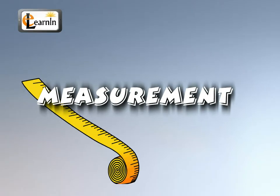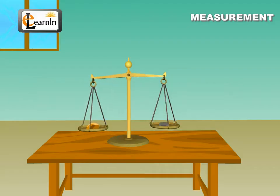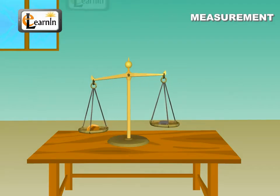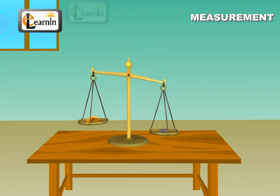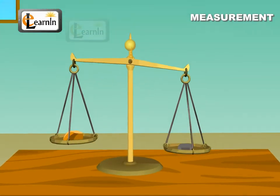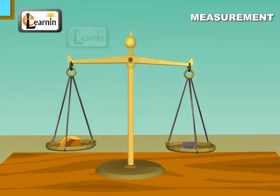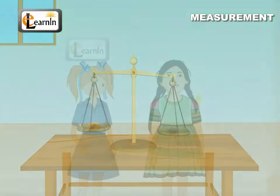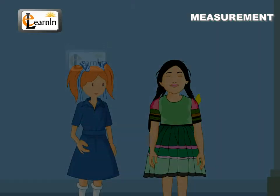Measurement. Objects are expressed in nature by measuring them against a common standard. Measurement is necessary since this helps us compare different objects. See how we use measurement in our daily lives to perceive objects around us.